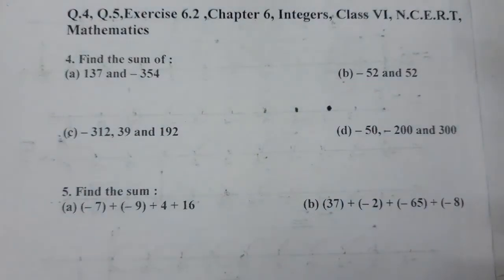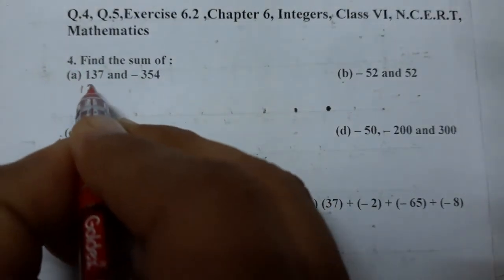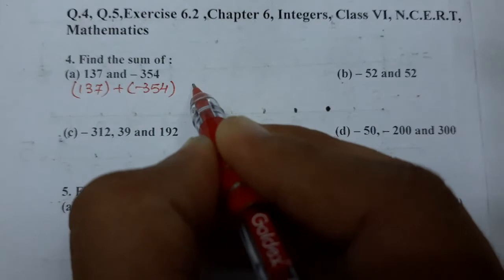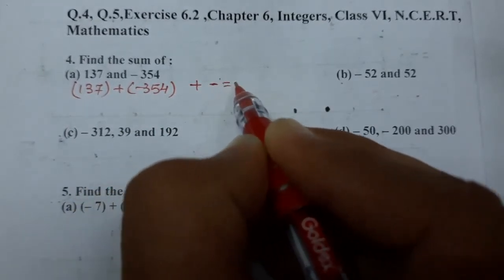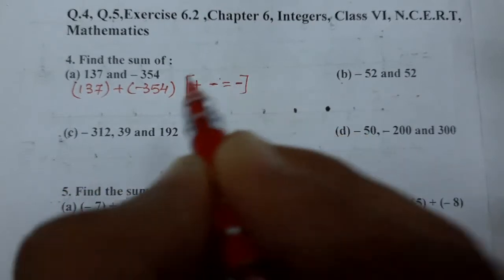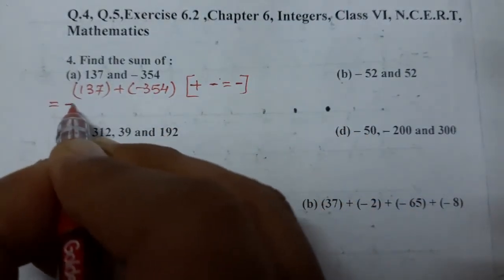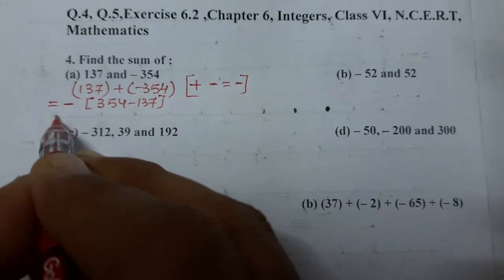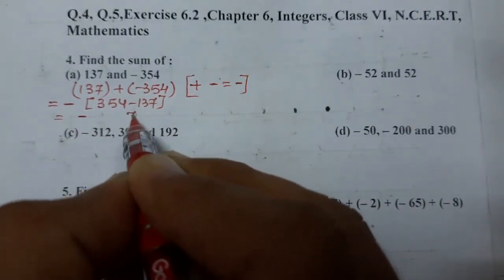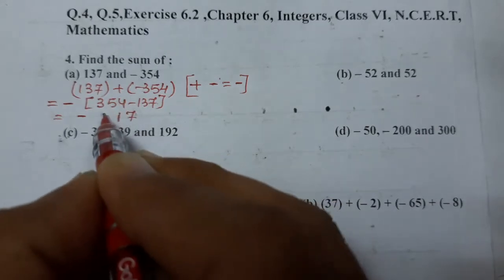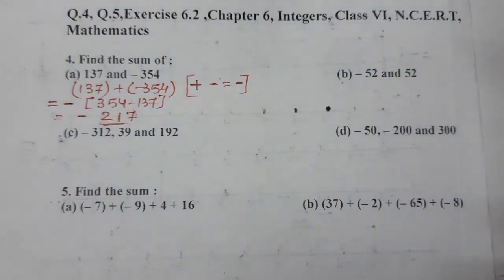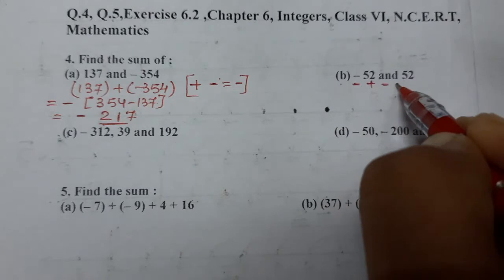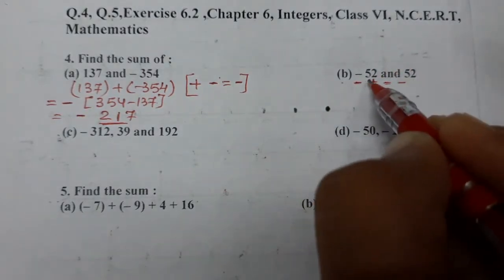So we know if one minus and one plus is there, we have to subtract. So 137 + (-354): one plus, one minus — we subtract and put the sign of the bigger one. Minus 354 is bigger, so the answer will be minus. We subtract and put the sign of the bigger one, so minus.